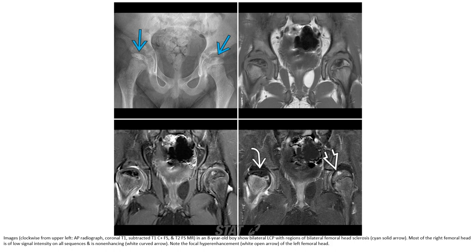Images clockwise from the left: AP radiograph, coronal T1, subtraction T1C+ FS, and T2 FS. This is an eight-year-old boy with bilateral disease. There is bilateral femoral head sclerosis. Most of the right femoral head is of low signal intensity on all sequences and non-enhancing. Note the peripheral rim hyperenhancement of the left femoral head.